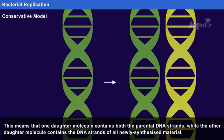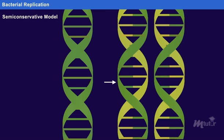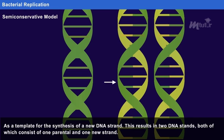Semi-conservative model. In this model, the two parental DNA strands get separated, and each of those strands serves as a template for the synthesis of a new DNA strand. This results in two DNA strands, both of which consist of one parental and one new strand.